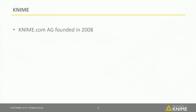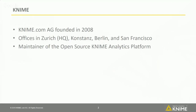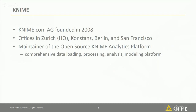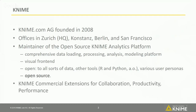KNIME.com was founded in 2008. We have offices in Zurich where we're headquartered, and we've opened offices in Constance, Berlin, and also in San Francisco. KNIME is the maintainer of the open source KNIME analytics platform, which is a comprehensive data loading, processing, analysis, and modeling platform. It has a visual front end and is open to all sorts of data, tools, and user personas — and it's also open source.